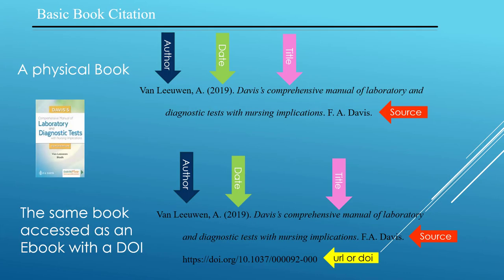A basic book citation is easy. Your building blocks are in the same order as those for an article citation: author, date, title, source. Remember to put the book title in italics. And if the book is an e-book, add the URL or DOI after the publisher's name. The source information for a book is the publisher's name, rather than the journal name.